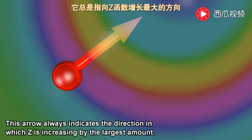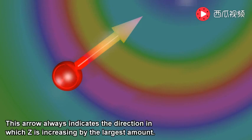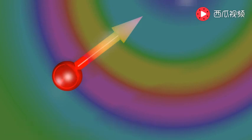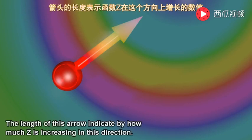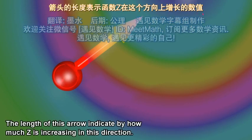This arrow always indicates the direction in which z is increasing by the largest amount. The length of this arrow indicates by how much z is increasing in this direction.